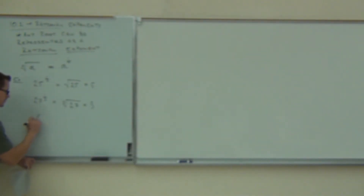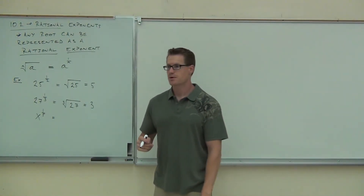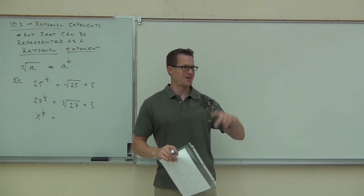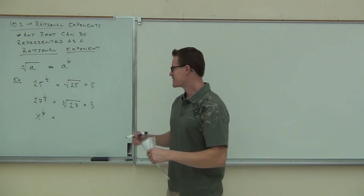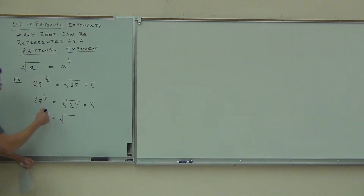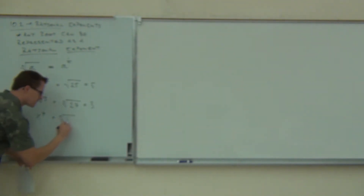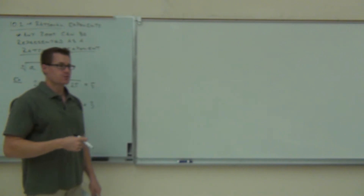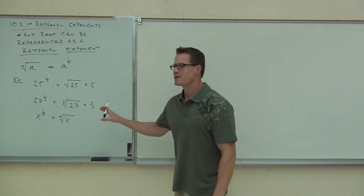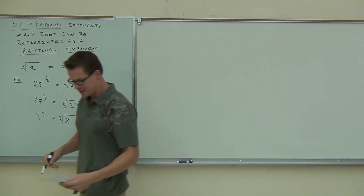Can you do it with just a variable? Let's translate x to the one-fifth. What type of root is it? Fifth root — the denominator tells you. So we have a radical with a fifth root, and x is on the inside. That's the fifth root of x. There's no number, so we can't simplify it further — we just leave it as the fifth root of x.